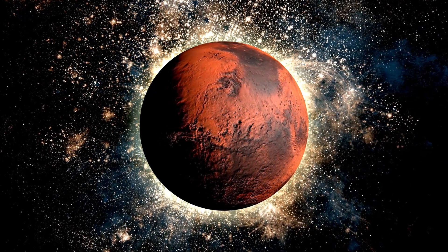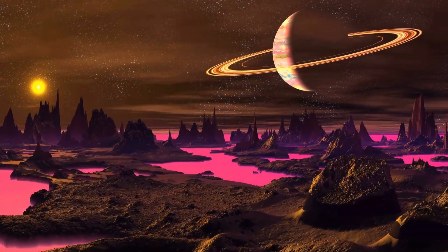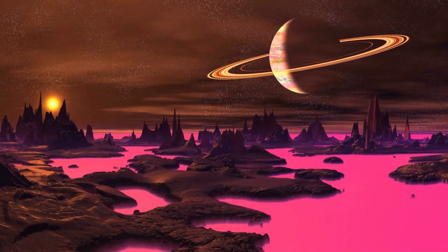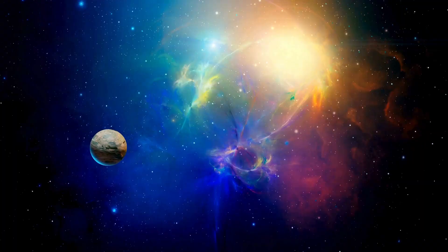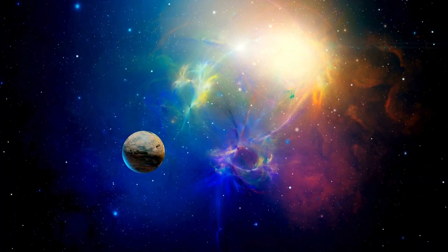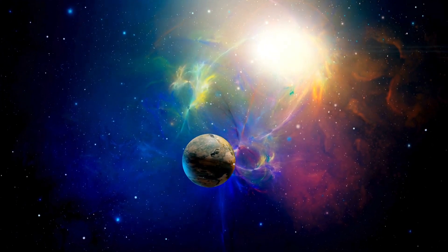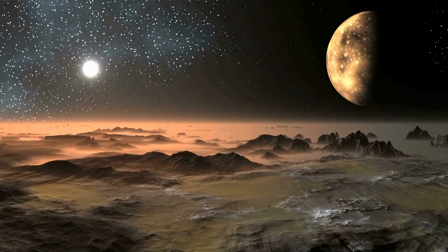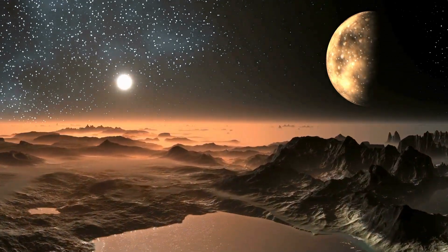The James Webb Space Telescope has given us the clearest glimpse yet of Proxima b's surface, and what it has revealed is both fascinating and mysterious. The planet's surface appears to be rocky, much like Earth's, but with significant differences. For instance, the side of the planet facing Proxima Centauri is likely scorched by constant heat, creating a barren, desert-like landscape.